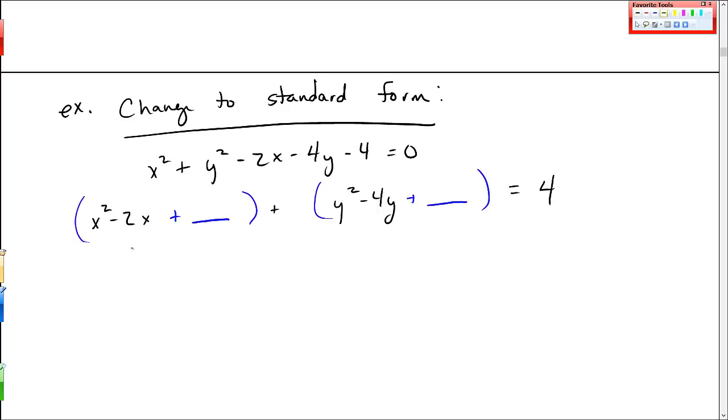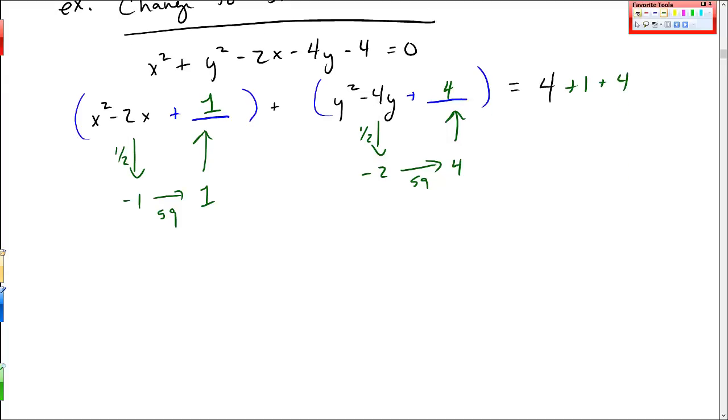So now for each of these, I'm going to take this and half it. That's -1. Square it, positive 1. And that's what I add. Here, take half of this -4. It's -2. Square it, positive 4. And that's what I add. So here I added a +1 and a +4. So now I'm going to factor. This is (x-1)^2 + (y-2)^2 = 9. So this is a circle that has center (1,2), and radius is 3.